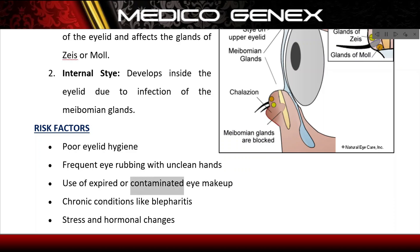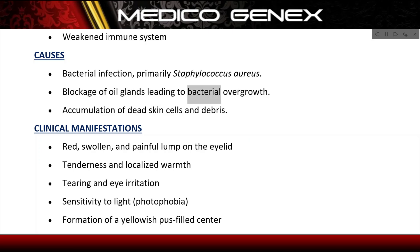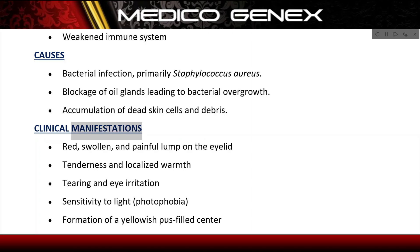Risk factors include poor eyelid hygiene, frequent eye rubbing with unclean hands, use of expired or contaminated eye makeup, chronic conditions like blepharitis, stress and hormonal changes, and a weakened immune system. The primary cause is bacterial infection, primarily Staphylococcus aureus, leading to blockage of oil glands, bacterial overgrowth, and accumulation of dead skin cells and debris.